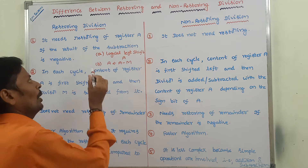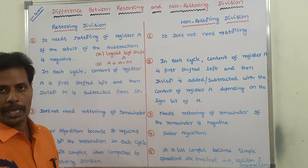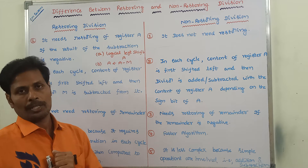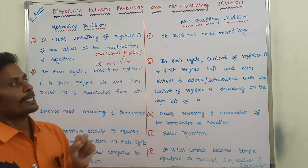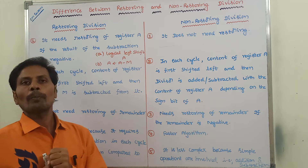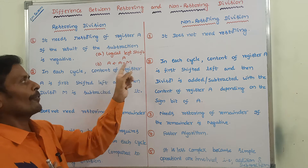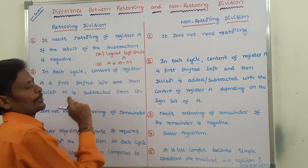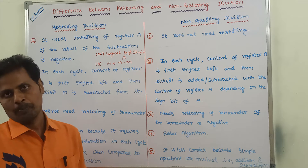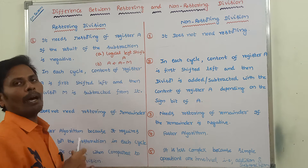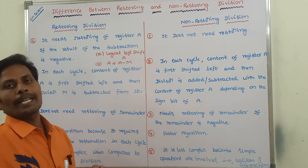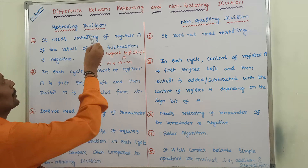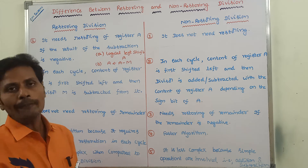In the restoring division algorithm, we have to follow two steps. First step is perform the logical left shift operation on register A. Second step is perform the subtraction operation between the content of register A and register M. After that, the result is stored in register A. Now we have to observe the sign bit of register A. If the sign bit of register A is 1, then we have to perform the restoring of register A.